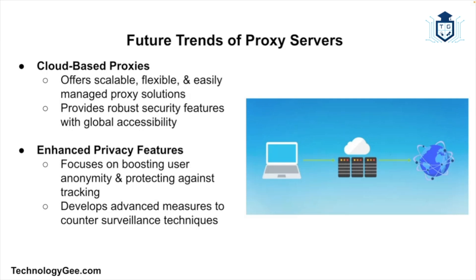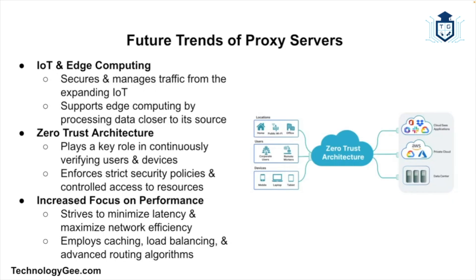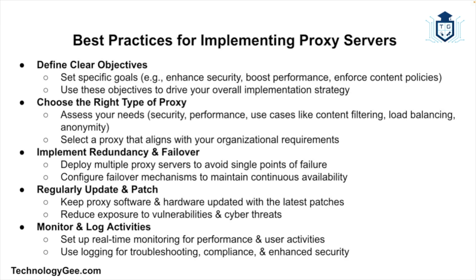Cloud-based proxy services are becoming more popular, offering scalability, flexibility, and ease of management, and these services can provide robust security features and global reach. With growing concerns about online privacy, proxy servers will continue to develop features that enhance user anonymity and protect against tracking and surveillance. As the Internet of Things expands, proxy servers will be used to secure and manage traffic from IoT devices, and edge computing will benefit from proxy servers to process data closer to the source. Proxy servers will also play a crucial role in zero trust security architectures, and future proxy servers will focus on minimizing latency and optimizing performance leveraging technologies such as caching, load balancing, and advanced routing algorithms.